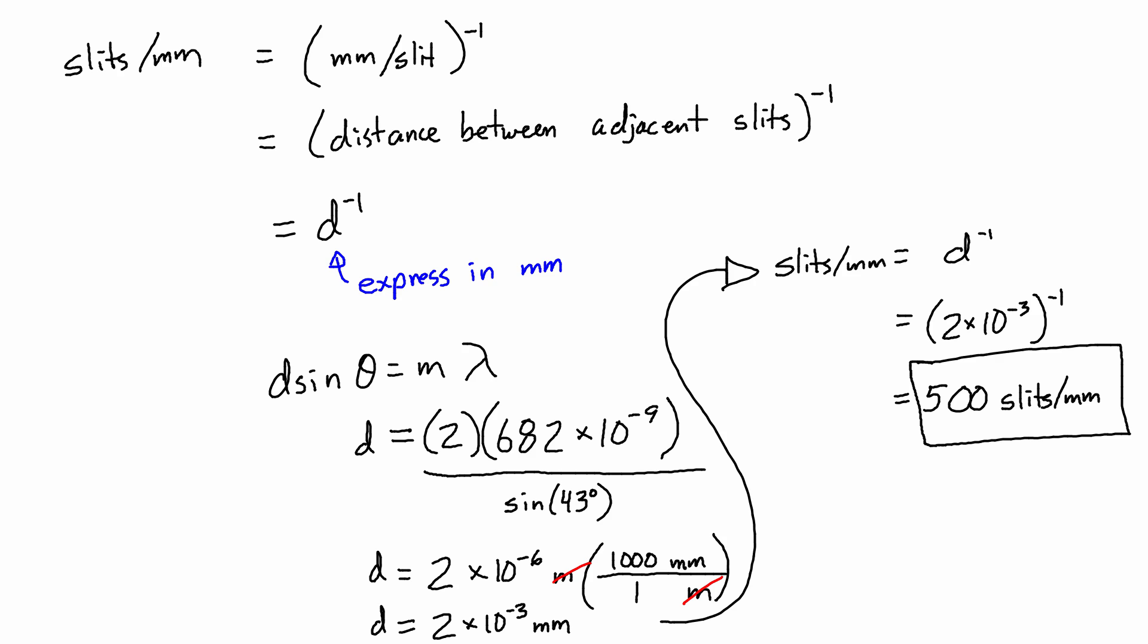you can just think of it as a dimensional analysis and look at the units. And if you look at inverting millimeters per slit, and that millimeters per slit being the distance between adjacent slits, that's really what links it to the variables that we have in terms of d sin θ is equal to m λ for the diffraction grating.